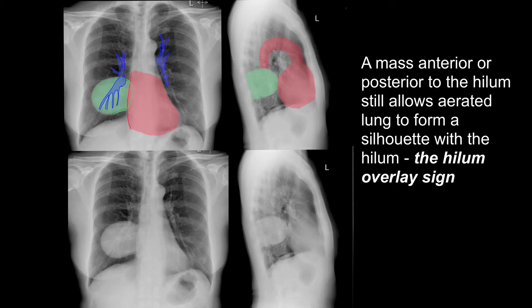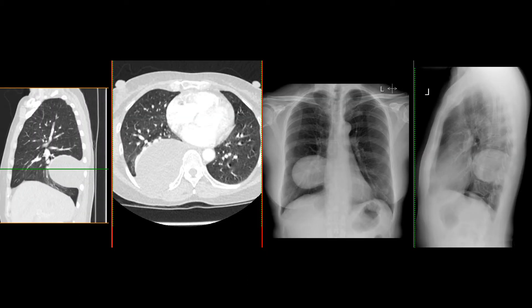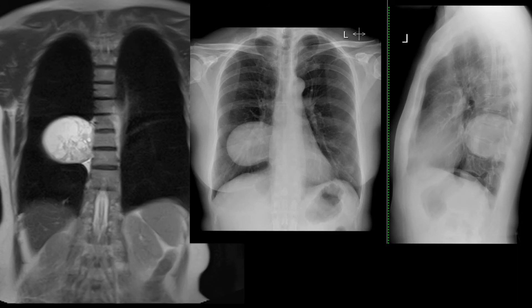This is the hilum overlay sign, with blood vessels coursing through. The CT of this patient confirms a posterior mediastinal mass whose epicentre is behind a line one centimetre behind the anterior longitudinal line, and this is an intercostal schwannoma. Note the obtuse angles as it arises from the chest wall. Here is the MRI of the same patient, nicely showing the intercostal schwannoma.